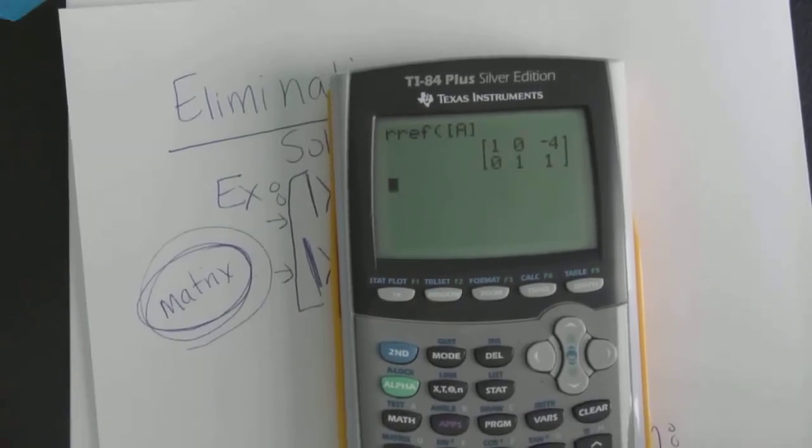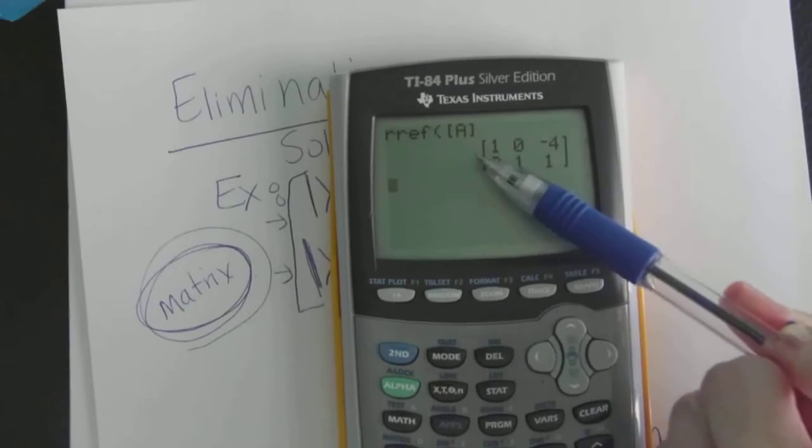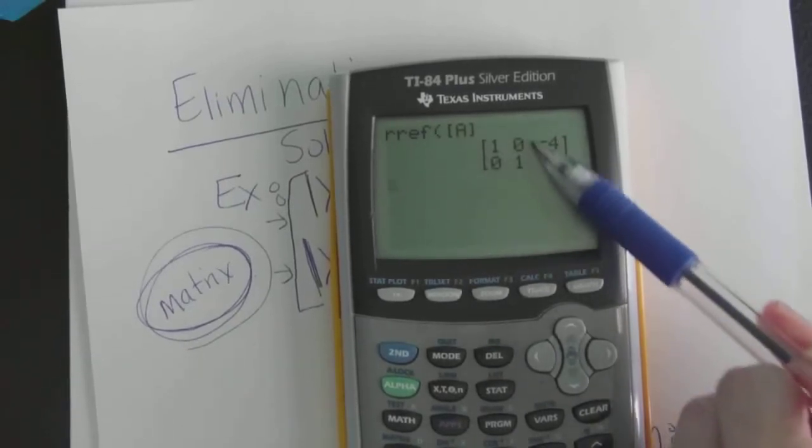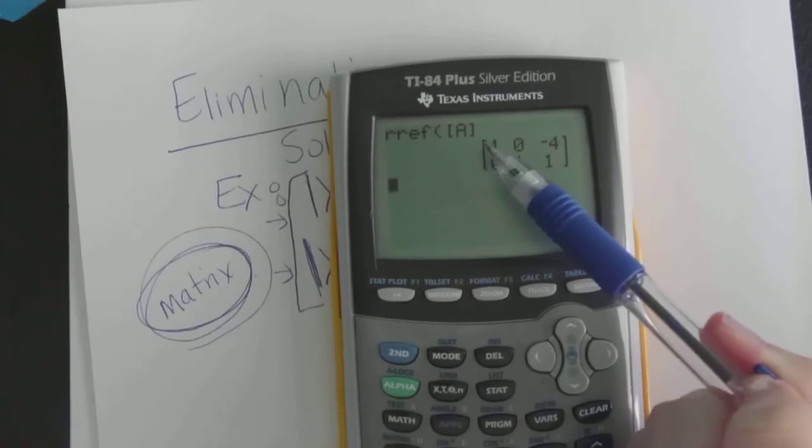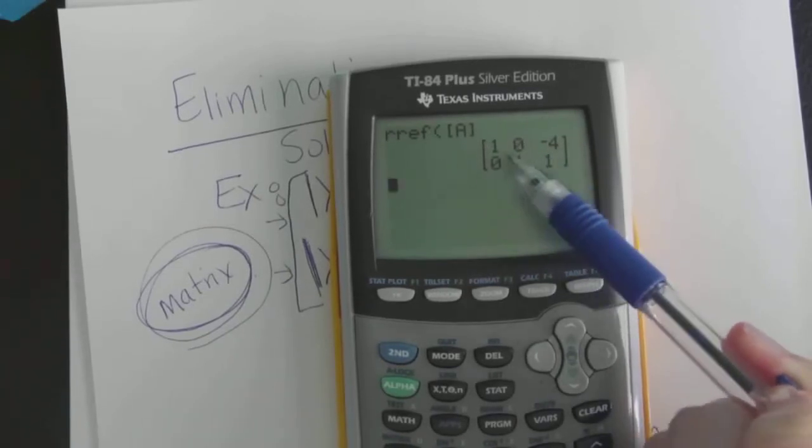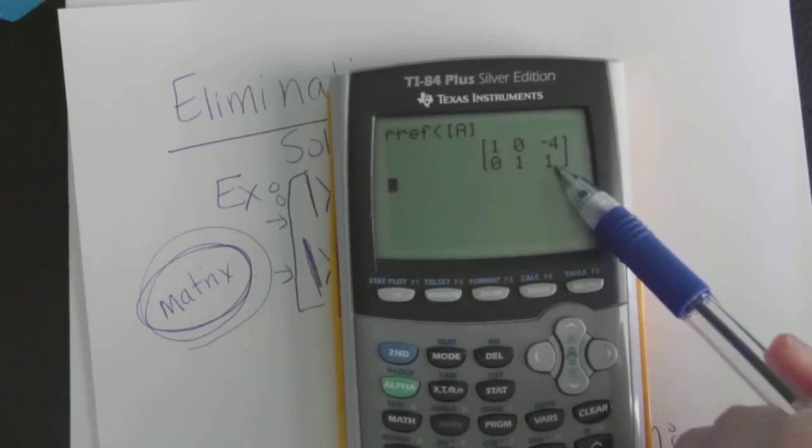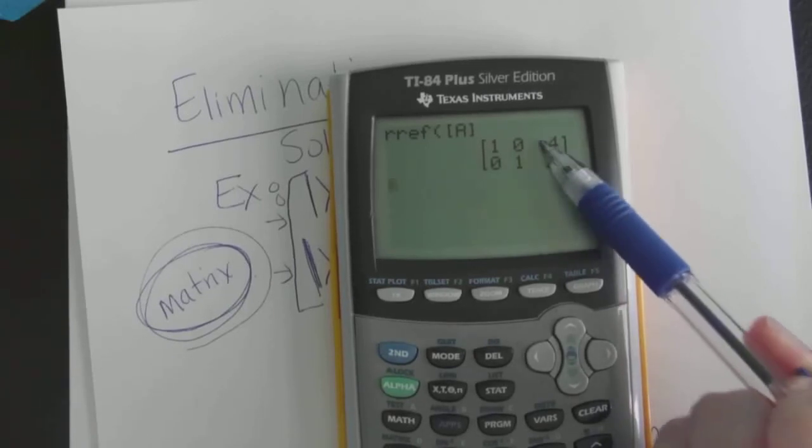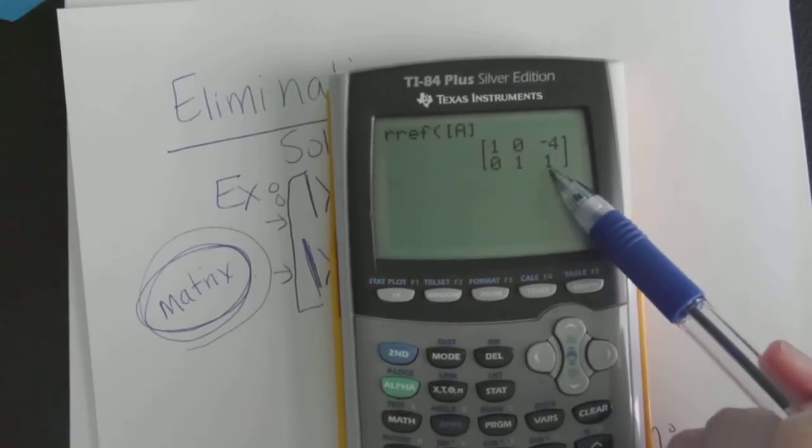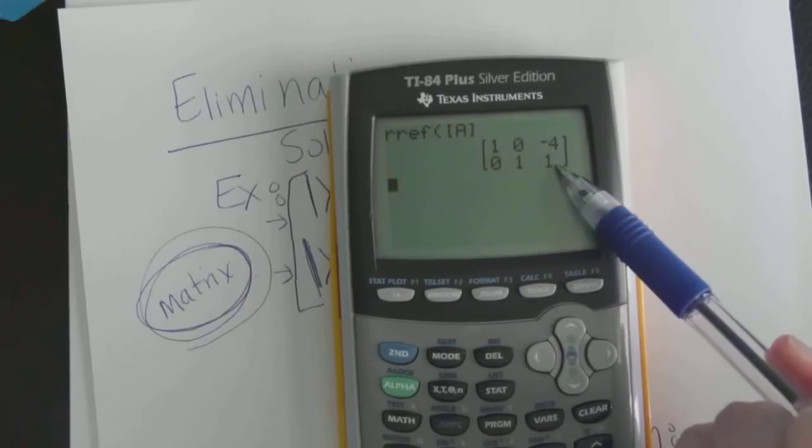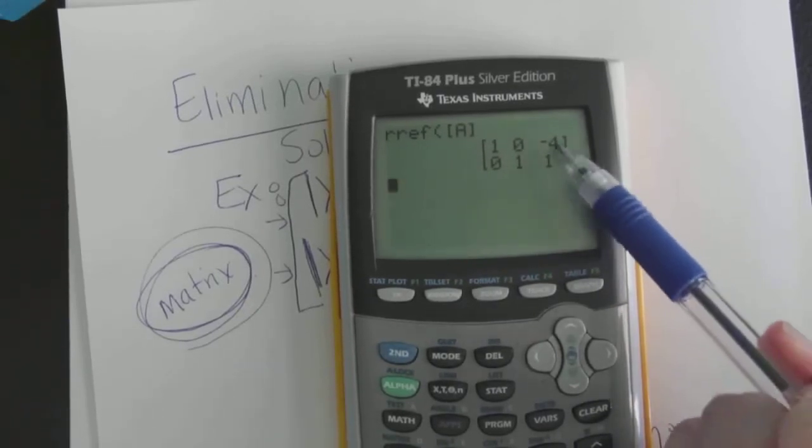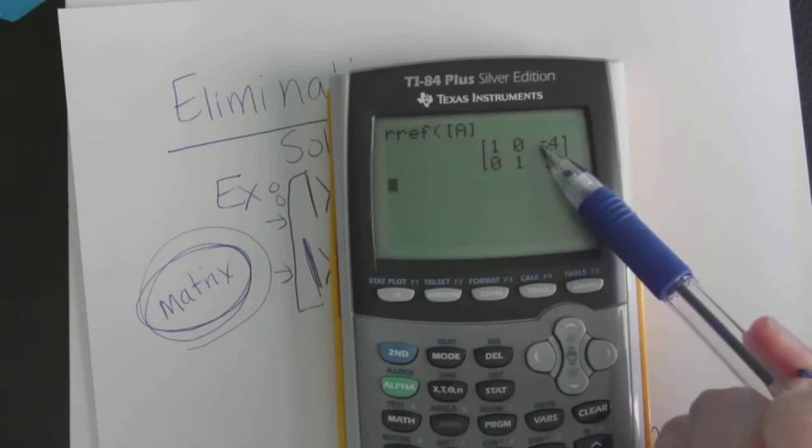So you hit enter and what comes up is, okay, you want me to solve matrix A? Yes, I sure do. So you hit enter again and there, believe it or not, is the answer. Once you have the first four numbers here in this beginning of the matrix, once this says 1, 0, 0, 1, you know that the back two numbers here is the answer to your system. The top is your X and the bottom is your Y.